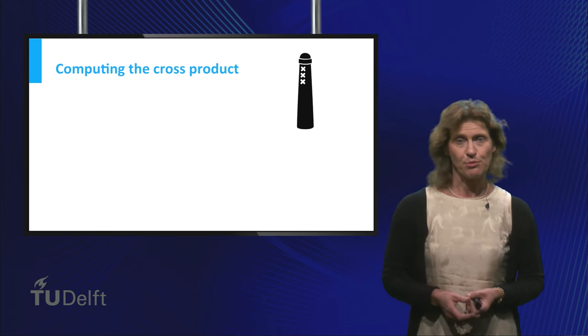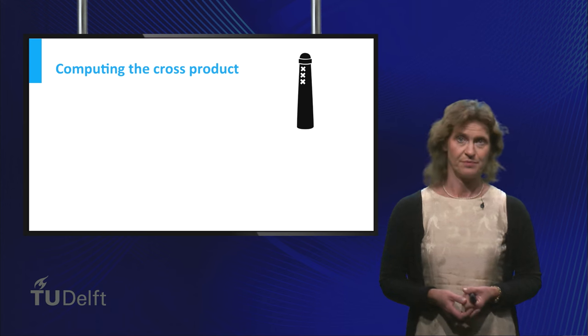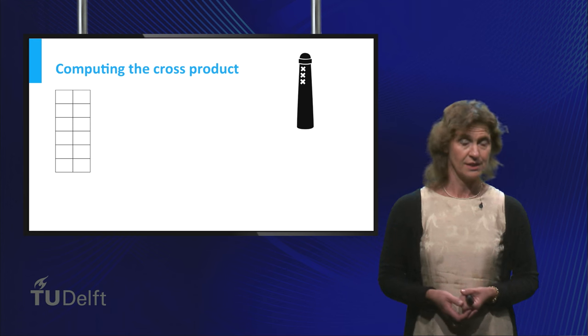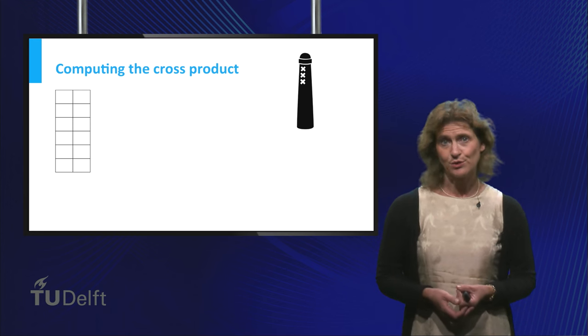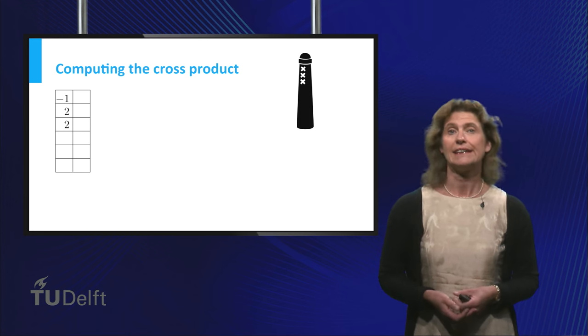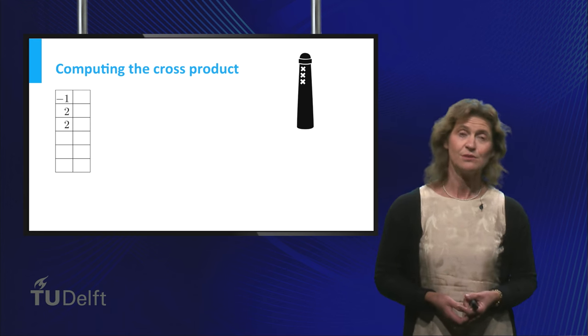Let's do an example with our vectors u and v. Write down a table with two columns and six rows. In the first three entries of the first column, you put the vector u, and in the next three entries, you do this again.